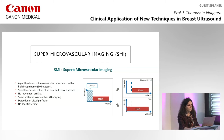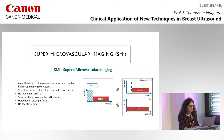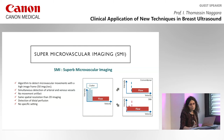The second technique I will discuss is Superb Microvascular Imaging (SMI), which is a new algorithm to detect microvascular movement with a high image frame rate. It provides simultaneous detection of arterial and venous vessels, no movement artifacts, the same spatial resolution as 2D imaging, and the ability to detect distal perfusion. No specific settings are required, so it is very easy to use.